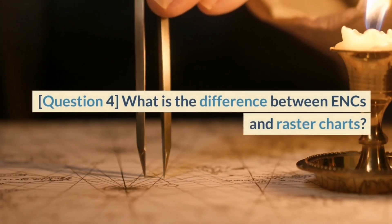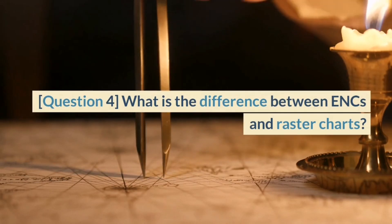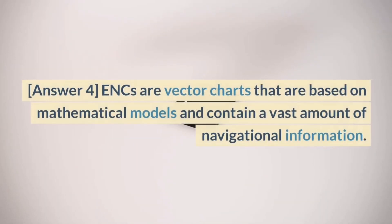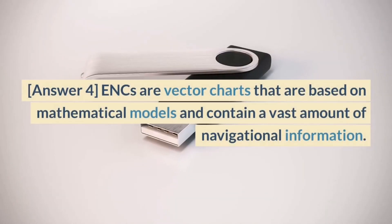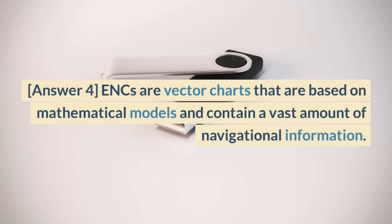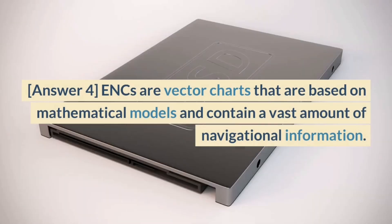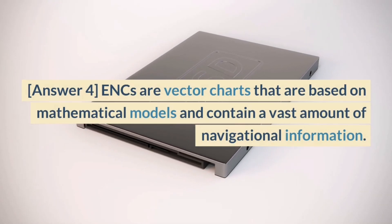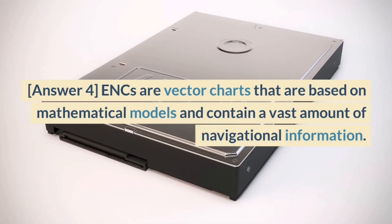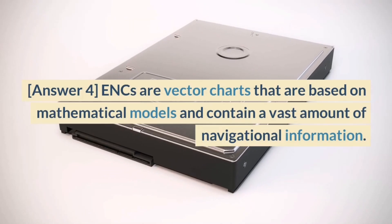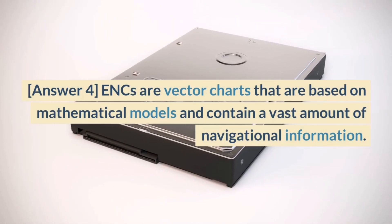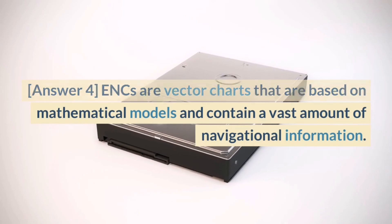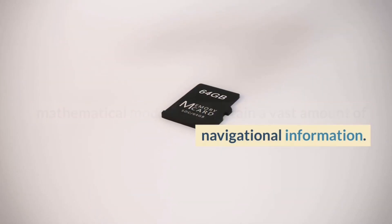Question 4. What is the difference between ENCs and raster charts? Answer 4. ENCs are vector charts that are based on mathematical models and contain a vast amount of navigational information. Raster charts are digital versions of paper charts and do not have the same level of detail and accuracy as ENCs.